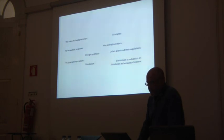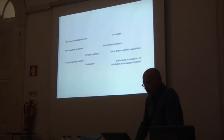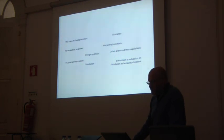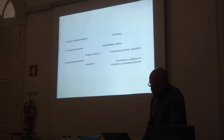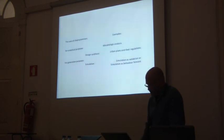As examples of the uses of shape grammars, we can see across all the literature produced on this topic that there are uses for analytical purposes — basically for understanding design styles and morphology — but also for generative purposes, producing design synthesis or for the purpose of simulation. Some examples include the production of urban plans and their regulations, and simulation as a validation process or as a behavior forecast.